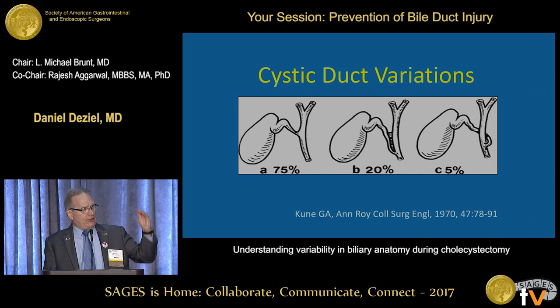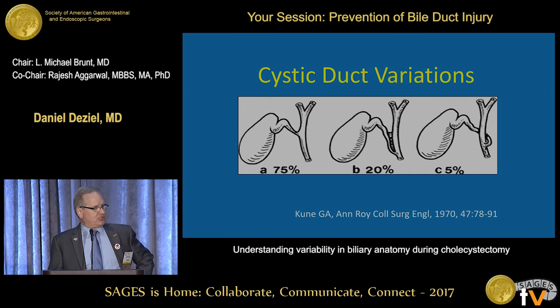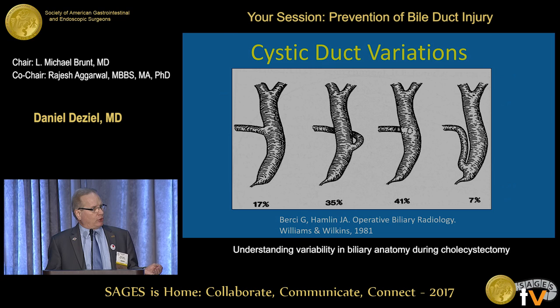The cystic duct can insert anywhere from the liver down to the periampullary region. An angular pattern with the common duct is considered typical, but the cystic duct can have a parallel course or a spiral course. In fact, if you look at cholangiographic studies, the textbook lateral entry is less common than either a medial or a posterior entry of the cystic duct.